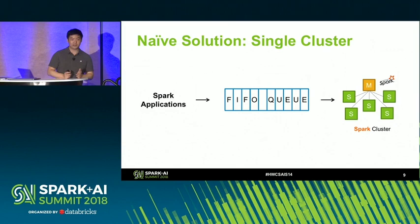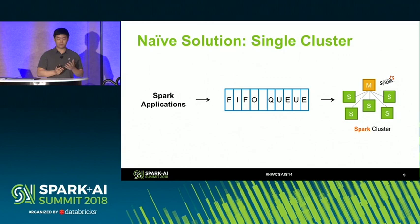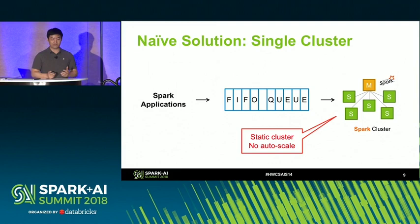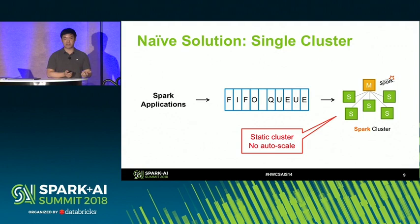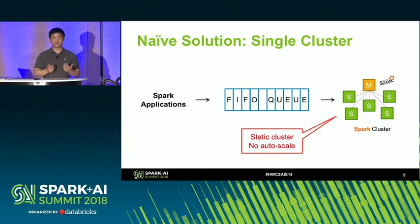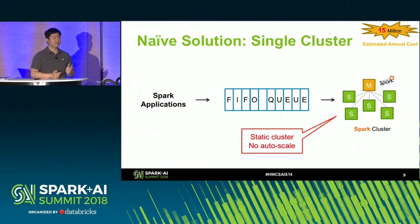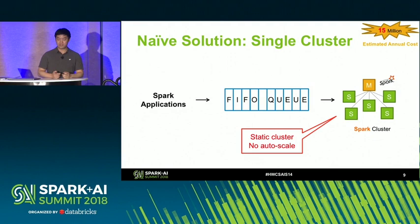Back in the early days at DataVisor, the naive approach we used when we had only one customer was simply a single static cluster — it didn't have modern features like autoscale. It sounds pretty basic, and that's the solution we used a couple of years ago. If we tried to use the same approach at our current scale today, the estimated cloud cost would be $50 million per year — a pretty bad idea to present to my CEO.